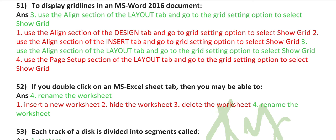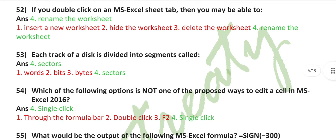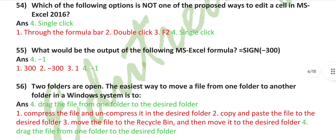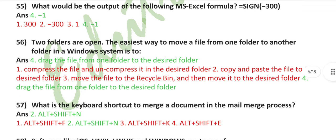To display green grid lines in an MS Excel 2016 document, use the align section of the layout tab and go to the grid settings option to select show grid. If you double-click on an MS Excel sheet tab, then you may be able to rename the worksheet. Each track of a disk is divided into segments called sectors. Which of the following options is not one of the proposed ways to edit a cell in MS Excel 2016? Single click.